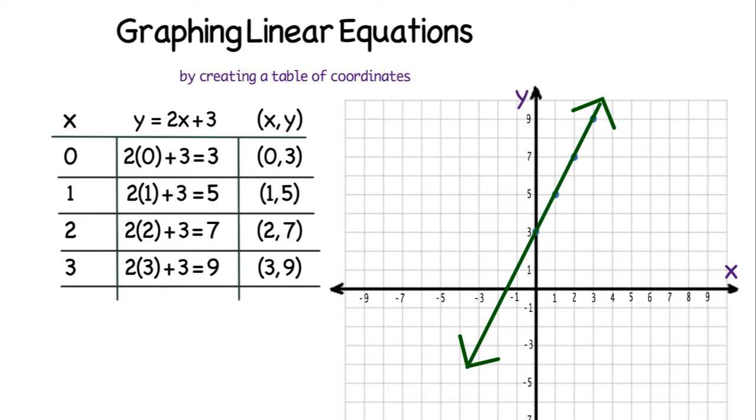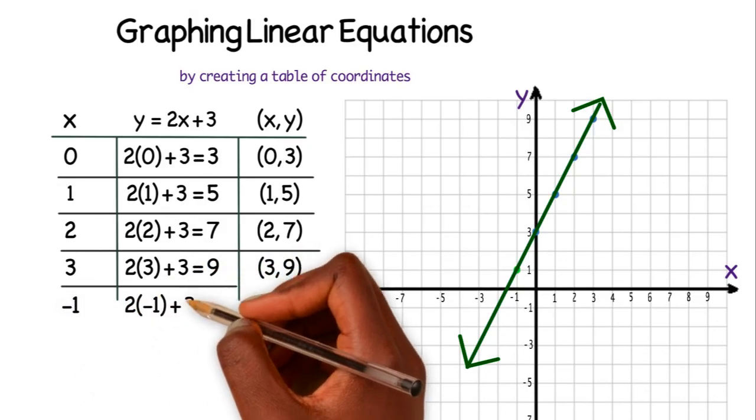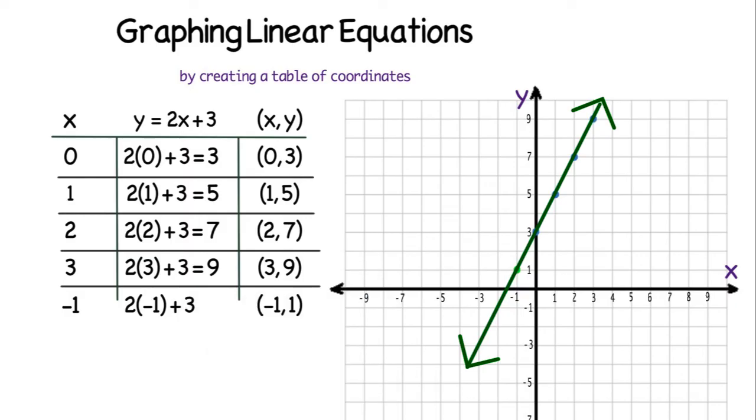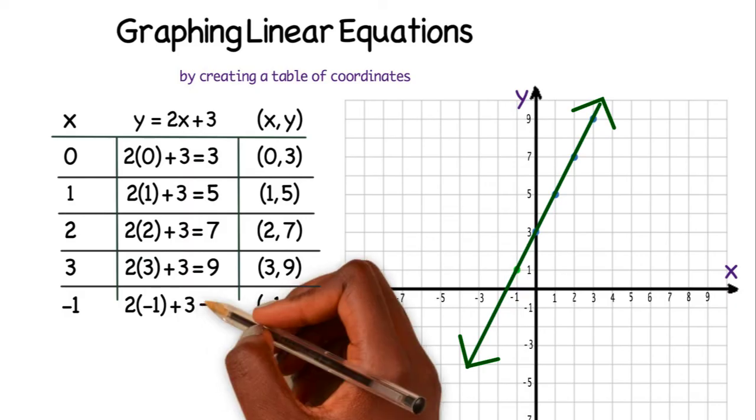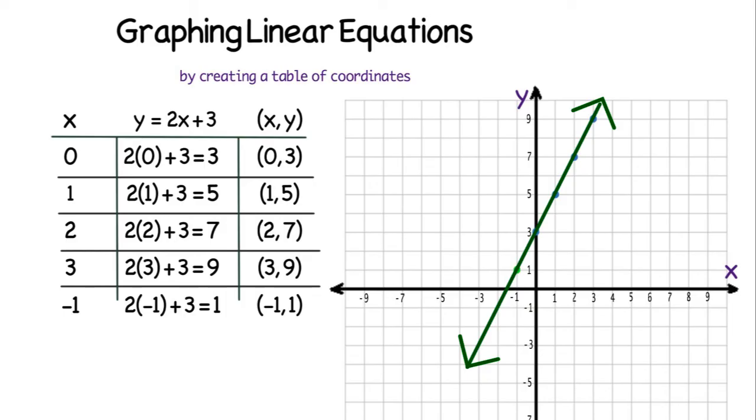If I choose one of the easier coordinates to verify on my graph, it looks like negative 1, 1 is a possible solution to y equals 2x plus 3. I'll check that by plugging in negative 1 for my x value. So I'll do 2 times negative 1 plus 3. 2 times negative 1 is negative 2, negative 2 plus 3 is 1. And that is correct. The negative 1 for x was paired with the 1 for y, so that has been verified that my graph was graphed accurately and it allowed me to find other solutions to the equation.